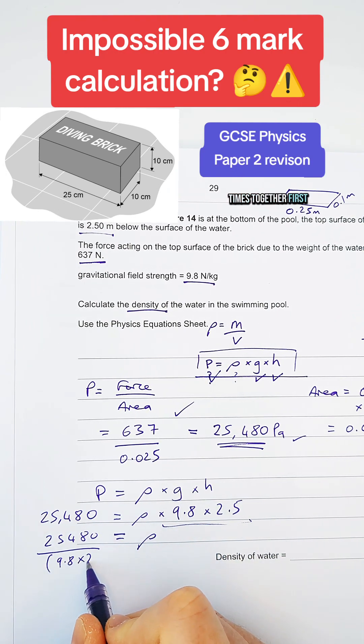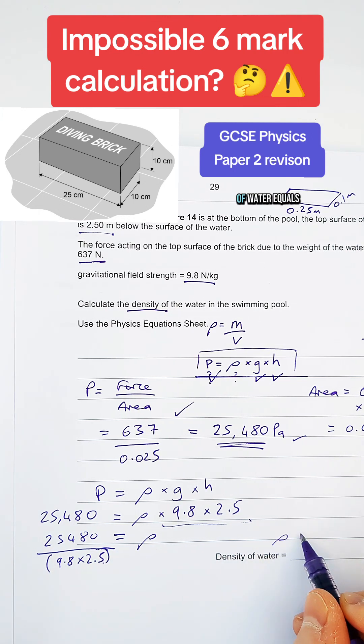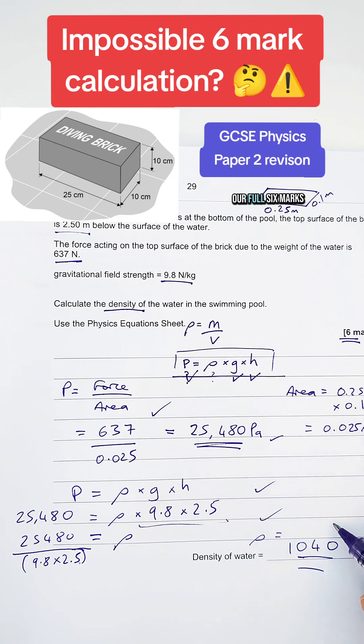You can always times it together first if you wanted to, to simplify it down, but you don't have to. If you're careful with your brackets and put that into your final calculation, you'll get the density of water equals 1040 kilograms per meter cubed. So to give us our full six marks.